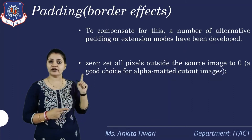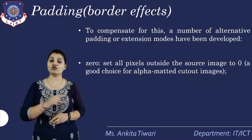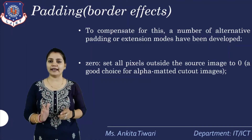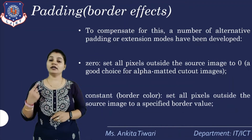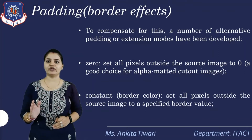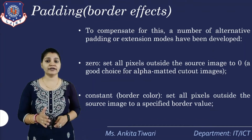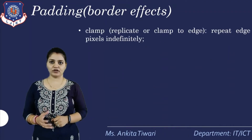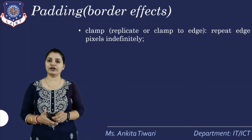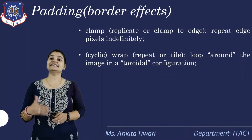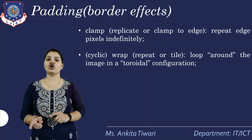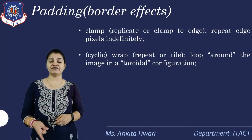The first padding mode is zero — setting all pixels outside the source image to zero, which is a good choice for alpha-matted cut-out images. Another mode is constant border color — setting all pixels outside the source image to a specified border value. Then we have clamp, also called replicate or clamp-to-edge, which repeats edge pixels indefinitely. There is also cyclic, that is wrap — looping around the image in a toroidal configuration.